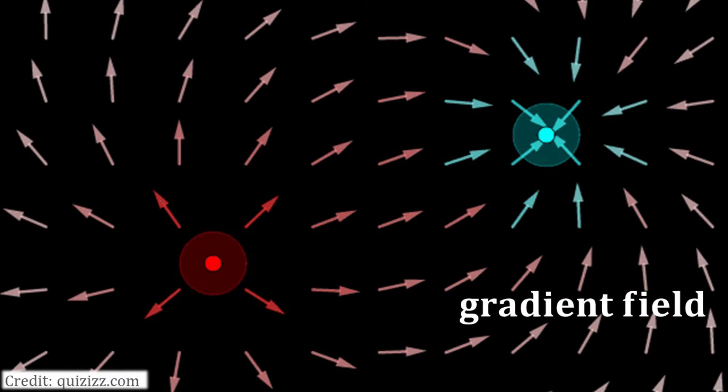It is very helpful to think of fields as originating from some sources. For example, electric fields sourcing and sinking from positive and negative charges, respectively, is a prime example.